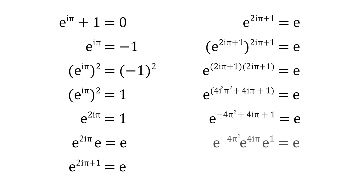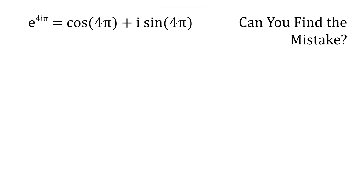We can split up the left-hand side of the equation into e to the power of negative four pi squared, times e to the power of four i pi, times e to the first power, and all of that equals to e. We divide both sides by e, and we get e to the power of negative four pi squared times e to the four i pi equals to one. e to the power of four i pi can be simplified as cosine of four pi plus i times sine of four pi. Cosine of four pi equals to one, and sine of four pi equals to zero. Therefore, e to the power of four i pi is equal to one.